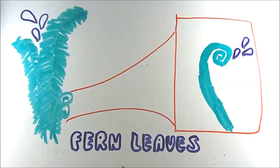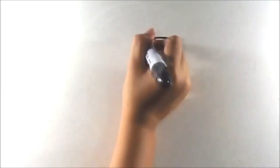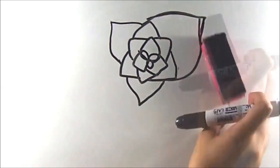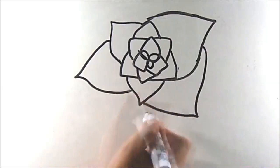Another plant, the succulent, also portrays the presence of the sequence. Its leaves grow exponentially.